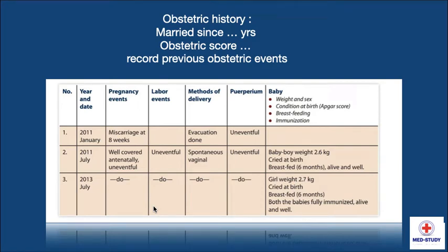We have to know the obstetric history, in which we have to know the marital status of the woman, the obstetric score in the form of gravida and para, and we have to record previous obstetric events in the form of a chart, which was discussed in detail in my previous video on ANC history taking.